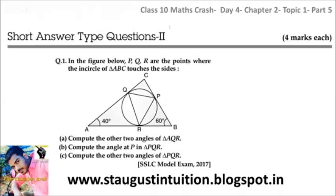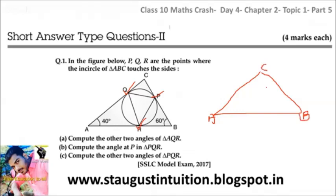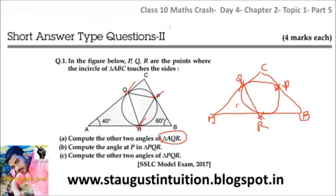P, Q, and R are the points where the inner circle of triangle ABC touches the sides. This is P, and Q, and R. When you join QR, you will get triangle AQR. This is the first question.